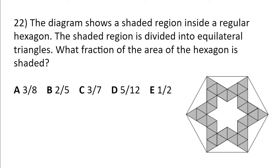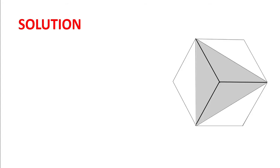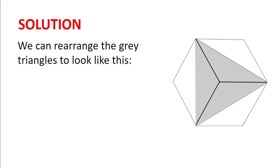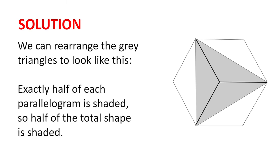First off we should try to change this shape into something easier to calculate. We see that the white star has area of 12 of these small equilateral triangles, and so we can rearrange this shape into something a bit like this. Now we have three identical parallelograms and exactly half of each parallelogram is shaded. So half of the total shape is shaded.